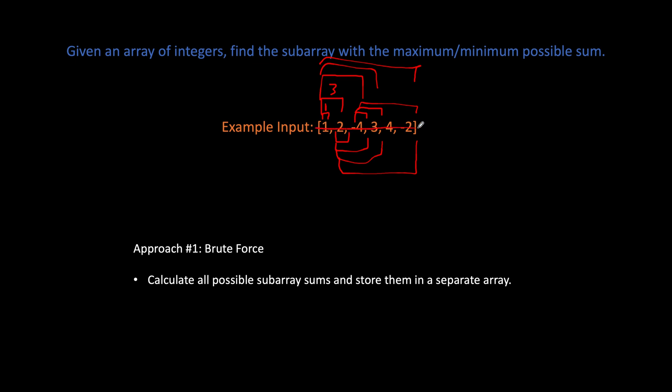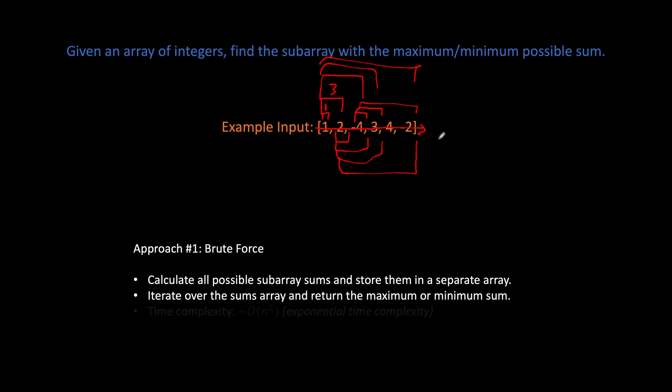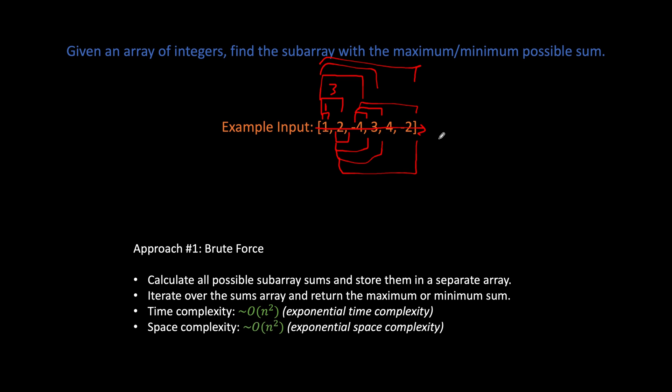We will have to process the array over and over again. Once we populate our sum array with all possible sums, we iterate it to find the maximum and minimum sums and return them. The time complexity is approximately O(n²), which is ridiculous. The space complexity is also approximately O(n²). Both are exponential, and with an unlimited input, we'd use unlimited time and space — so this is not a good solution.